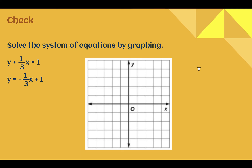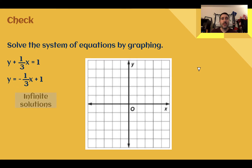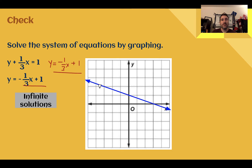Check your understanding: solve this system of equations by graphing. The answer is an infinite number of solutions. The top equation, when rewritten by subtracting one-third x from both sides, gives y equals negative one-third x plus 1. Both equations are now exactly the same. Graphing the first — negative one-third x with y-intercept 1 — the second line is in the exact same place. This system has an infinite number of solutions.